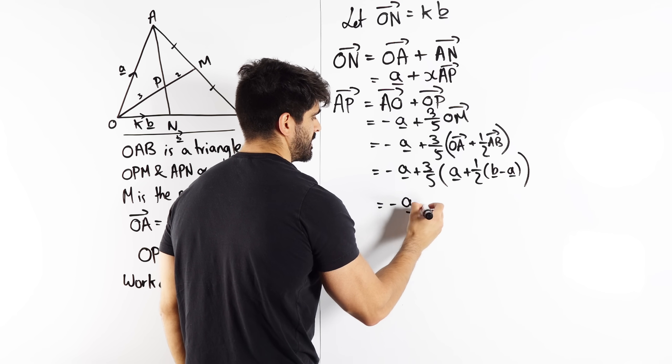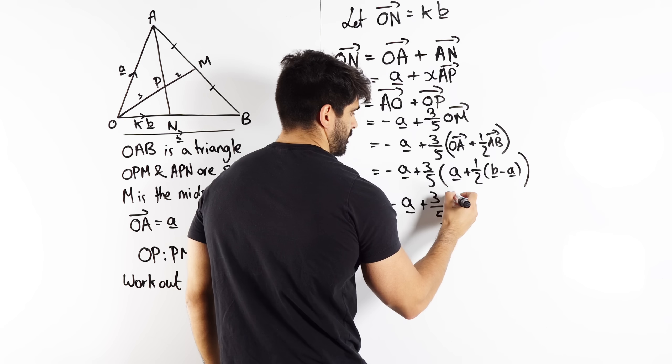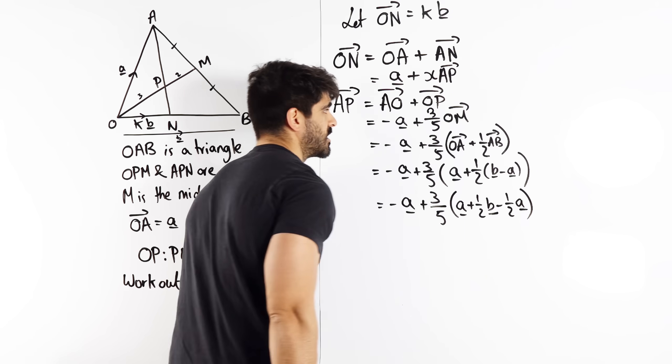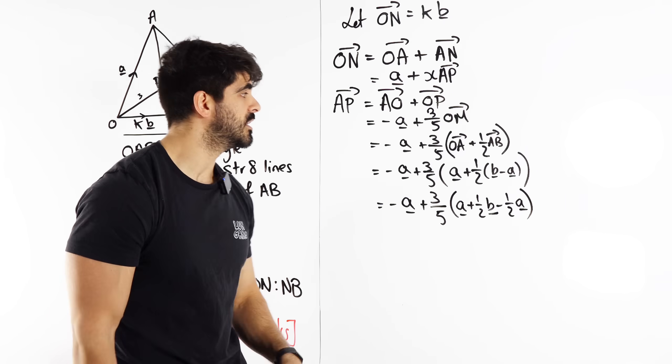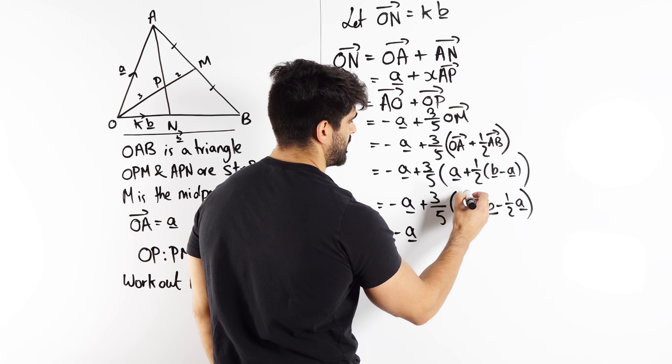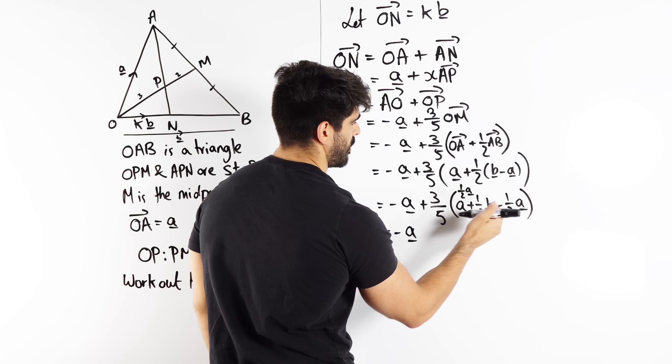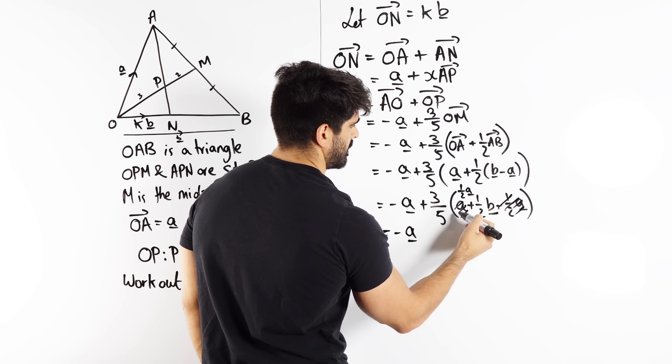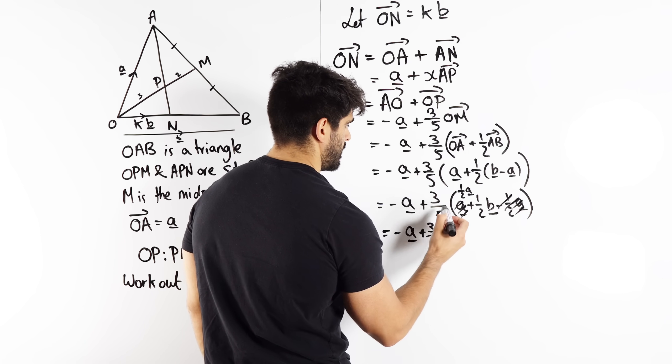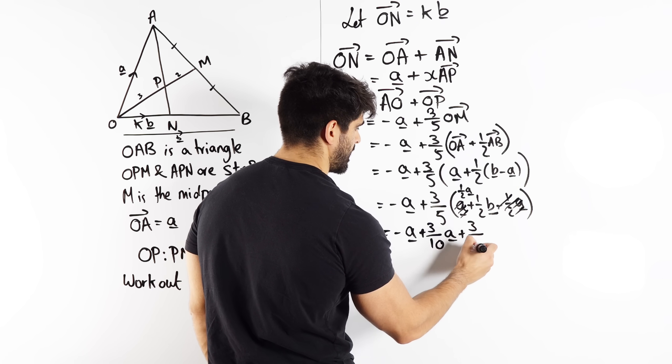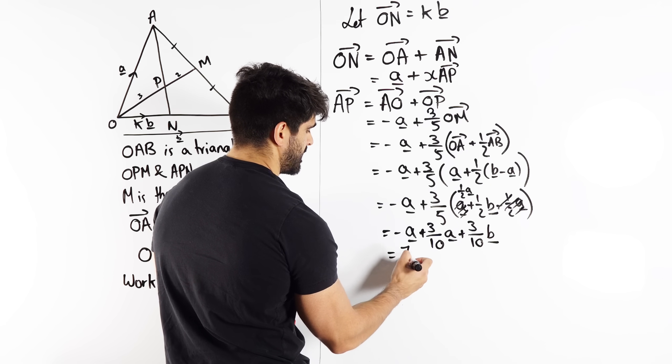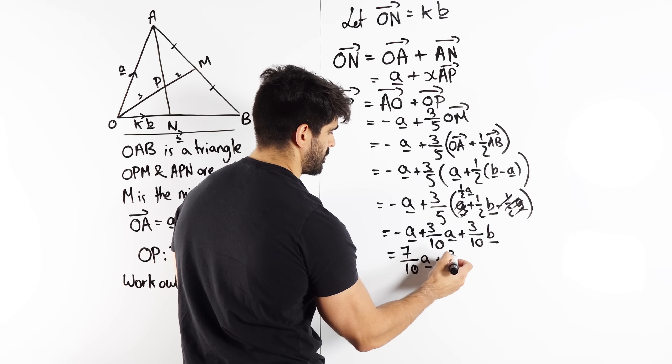We need to expand all that. So you have minus A, we have three fifths. Here we have A plus a half B minus a half A. So I'm really detailing everything I'm doing, so I don't need to think too much. So we have minus A. Now A minus a half A is just a half A. So we have a half A, a half A plus a half B. Three fifths times a half is three tenths A. Then three fifths times a half is three tenths B. Simplify again. Minus A plus three tenths A is minus seven tenths A, plus three tenths B.